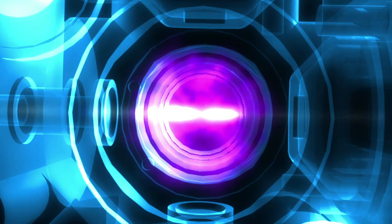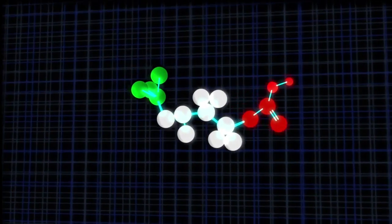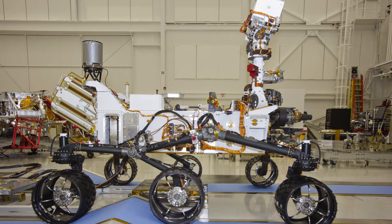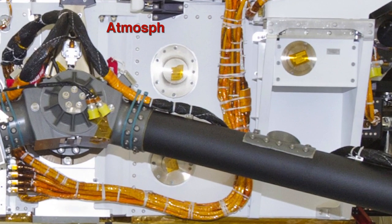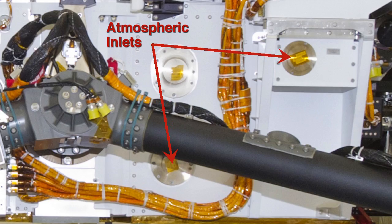We can bake solid samples until they give up their volatile components or their gases, or we can directly inhale the Martian atmosphere through our inlet ports.